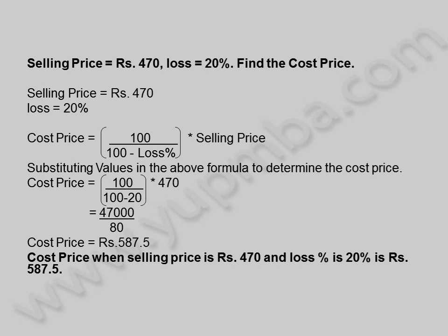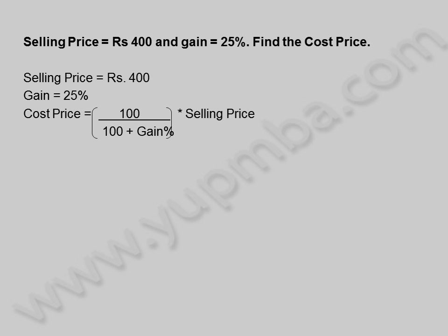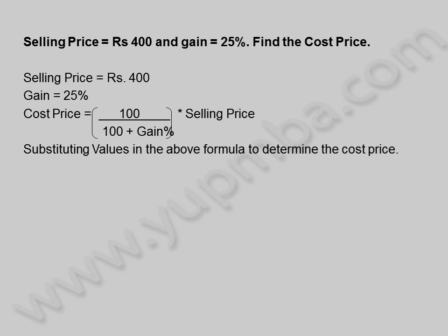Let us see another example. Selling Price is equal to 400 Rupees. Gain is equal to 25%. Find the Cost Price. Cost Price is equal to 100 divided by (100 plus gain percentage) into Selling Price. Substituting values in the above formula to determine the cost price.